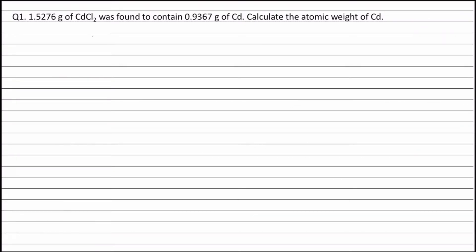Let the atomic weight of cadmium be W. Therefore, molecular weight of cadmium chloride will be equal to W plus 71 grams, where 71 is the total weight of two atoms of chlorine.